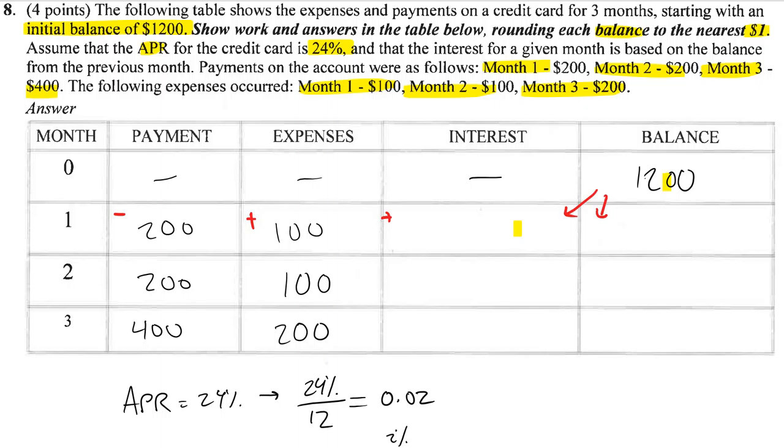So I need to calculate 2% of 1,200. Running that in my calculator, I get exactly 24. So adding everything up, 1,200 minus 200 plus 100 plus 24 gives me a value of 1,124. Now you want to double-check that, of course.